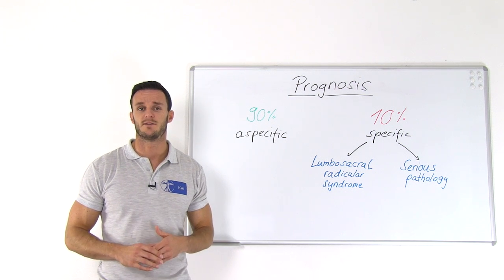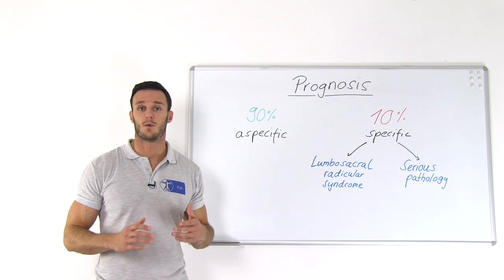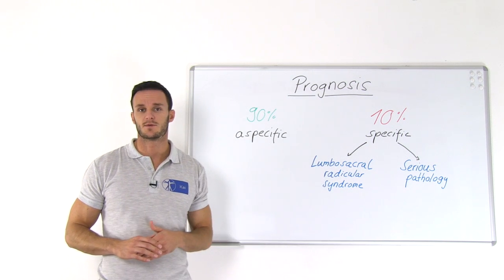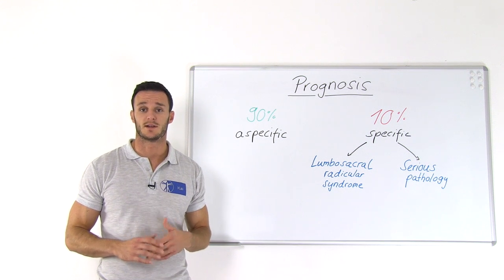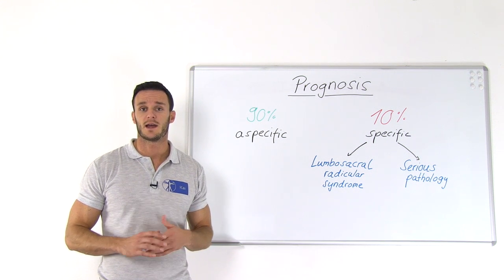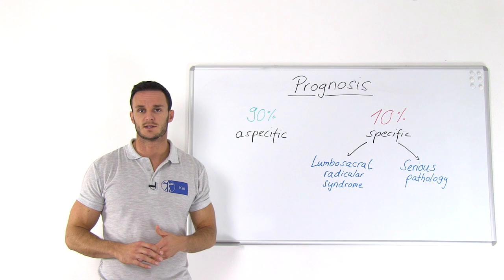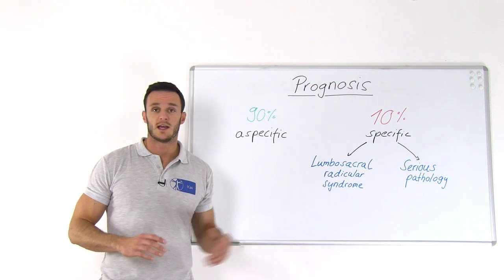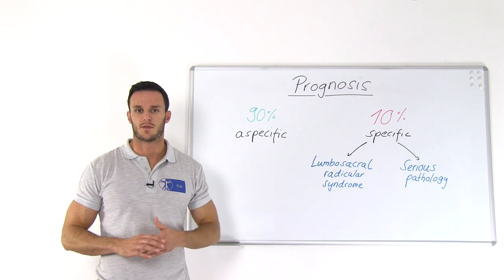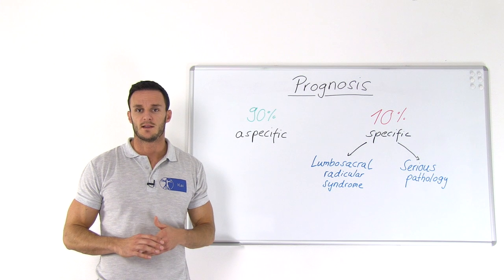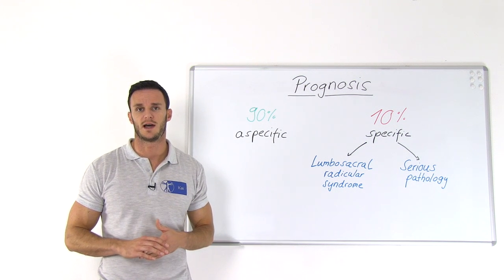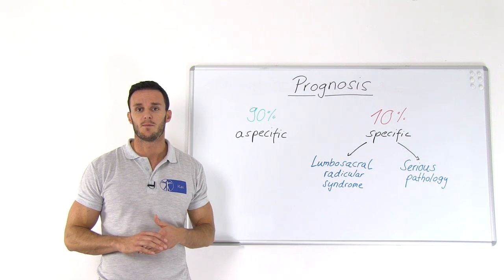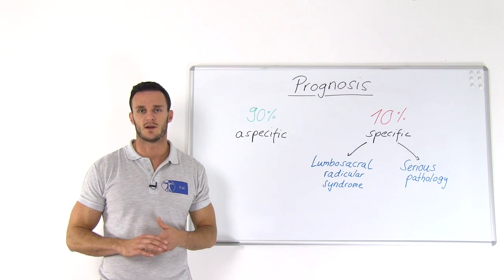Specific low back pain is divided into two categories. Number one is lumbosacral radicular syndrome, which is characterized by radicular pain in one leg with or without neurological symptoms. Number two is low back pain from a serious pathology, which could come from a vertebral fracture, cancer, ankylosing spondylitis, lumbosacral stenosis, or spondylolisthesis.